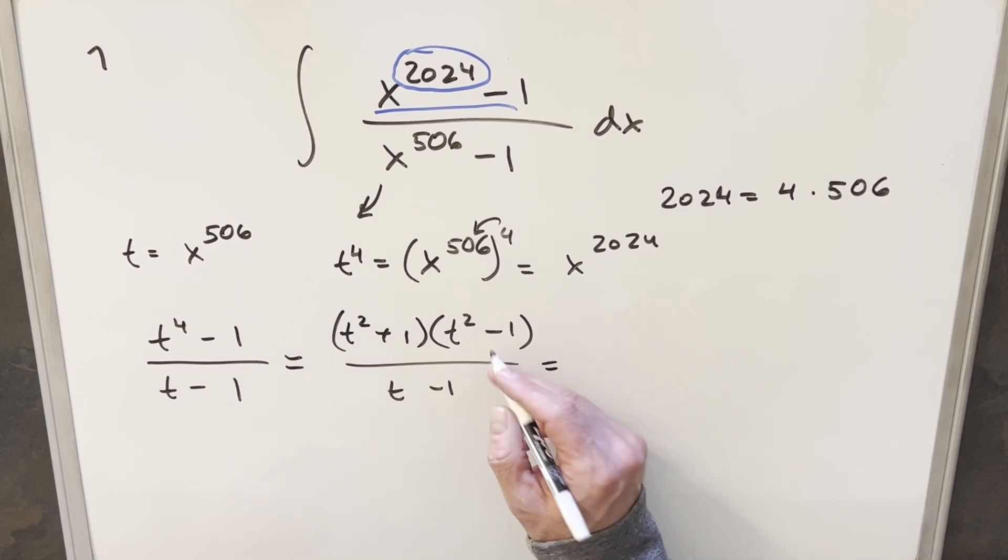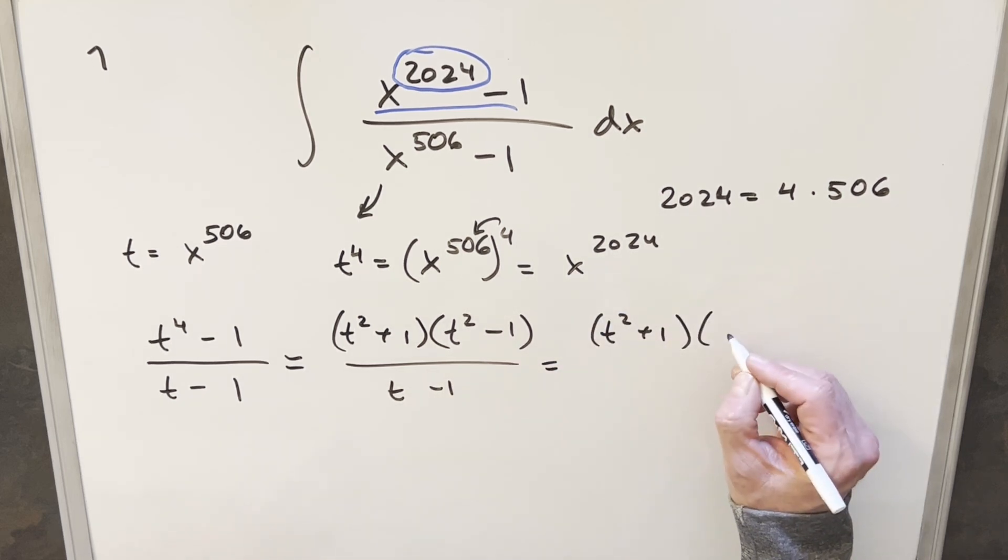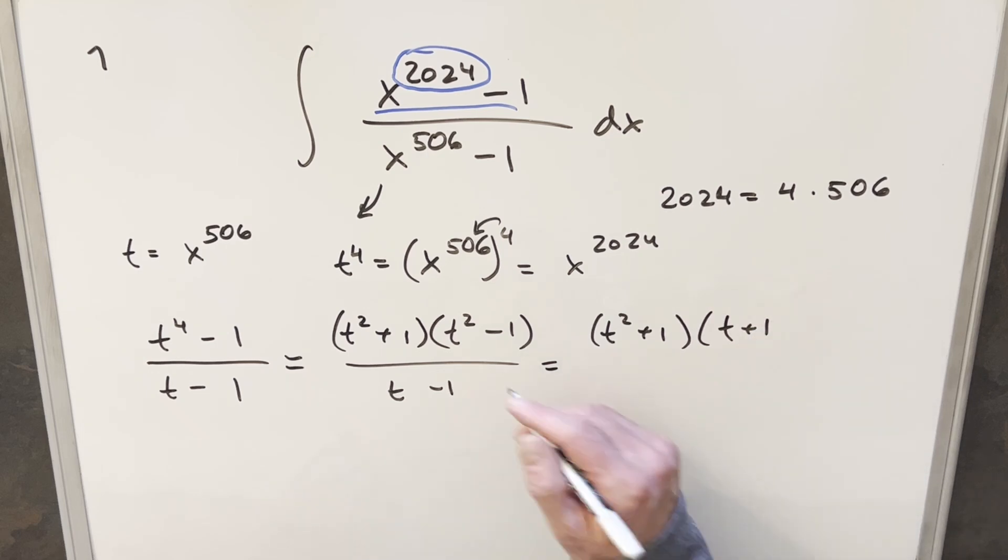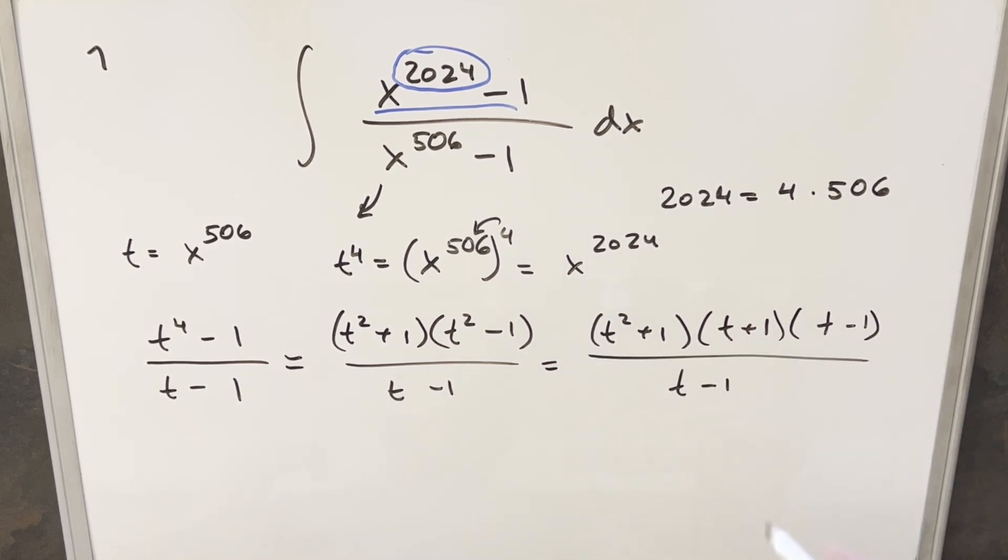But then again, on this term here, I can use difference of two squares again. So we'll have our t squared plus 1, but then this will become t plus 1 times t minus 1. But then that's going to allow me to cancel the t minus 1s here, which is nice, because now we don't have a rational expression, it's just going to be like a polynomial. Then what I'll do is multiply this back out in order to get a polynomial. So this is going to become t cubed plus t squared plus t plus 1.